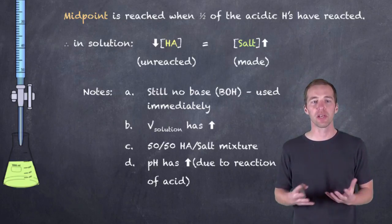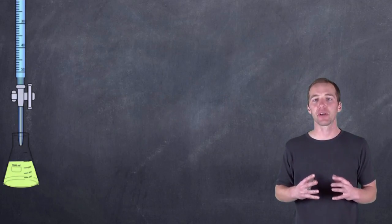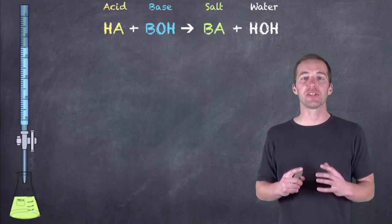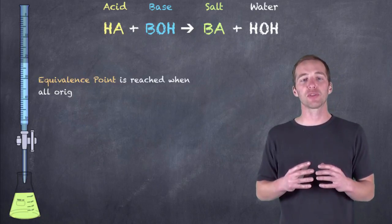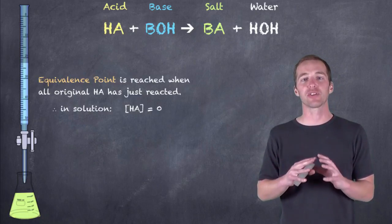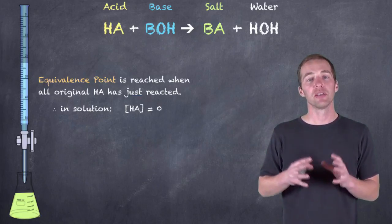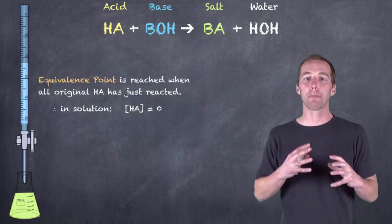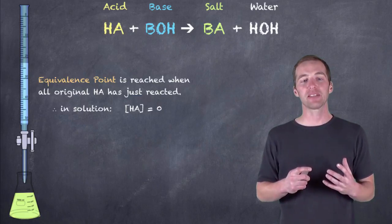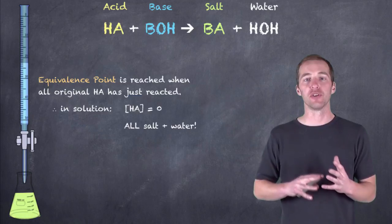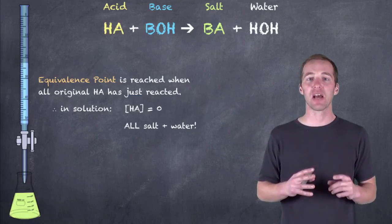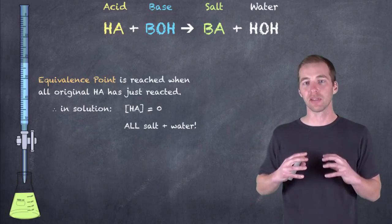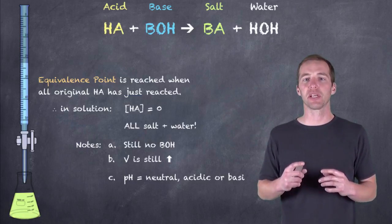Continuing on, we're eventually going to reach the equivalence point — really the purpose of going through these titrations. The equivalence point is reached when all of the original acid has completely reacted with the base. At this point, the analyte and titrant have completely reacted with one another. What that means is that it's all salt and water — there is no acid, there is no base in excess. We have nothing but a salt solution when we have reached the equivalence point, and there's still no significant amount of base or acid in solution at this time.